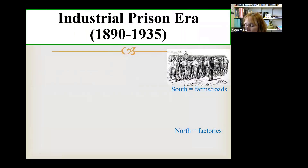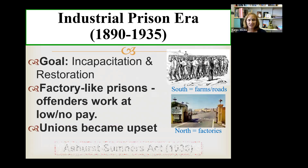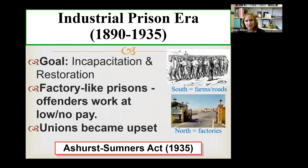People started to lose faith in rehabilitation because people were still committing crimes. So there was a switch in goals again — still somewhat believing in rehabilitation, but much more focused on incapacitation. There was also a belief in restoration: if you commit a crime, you need to pay back to society. So this era became about making inmates work and restoring society to the position it was in before the crime.